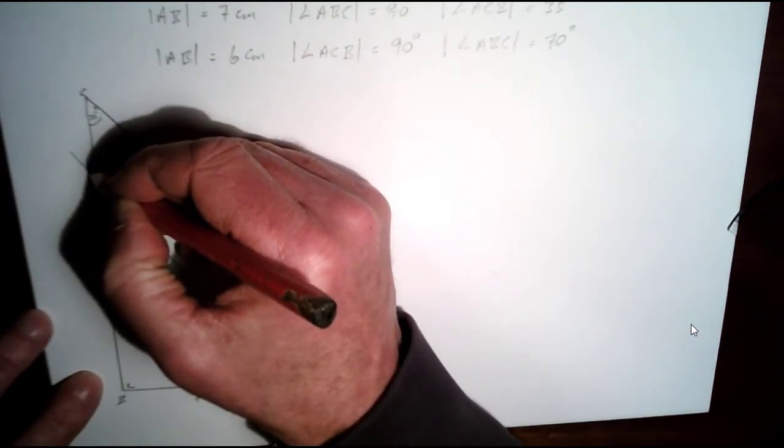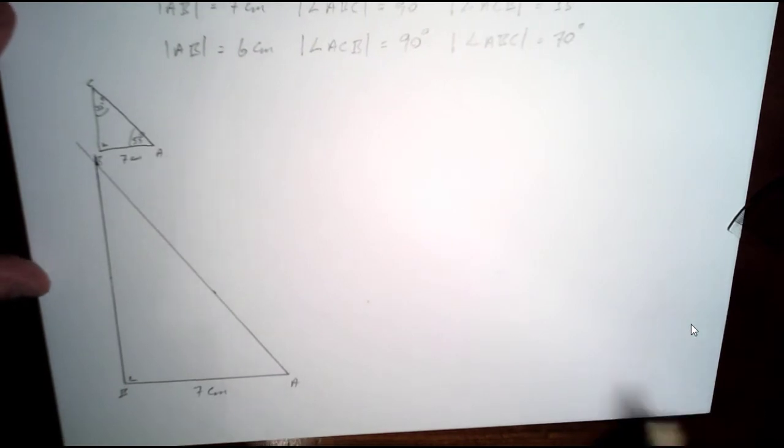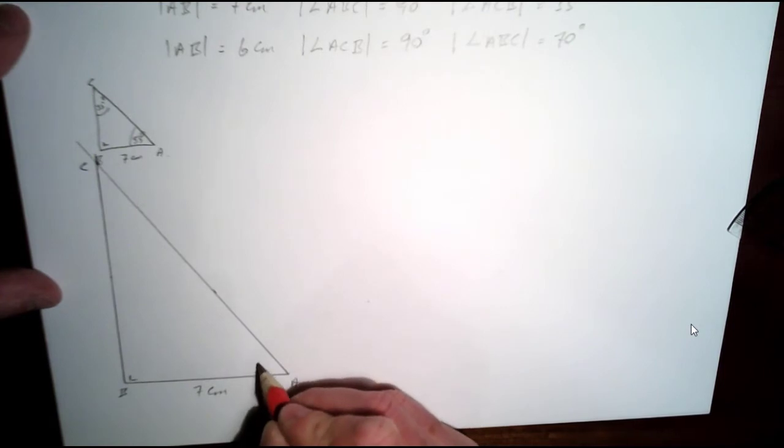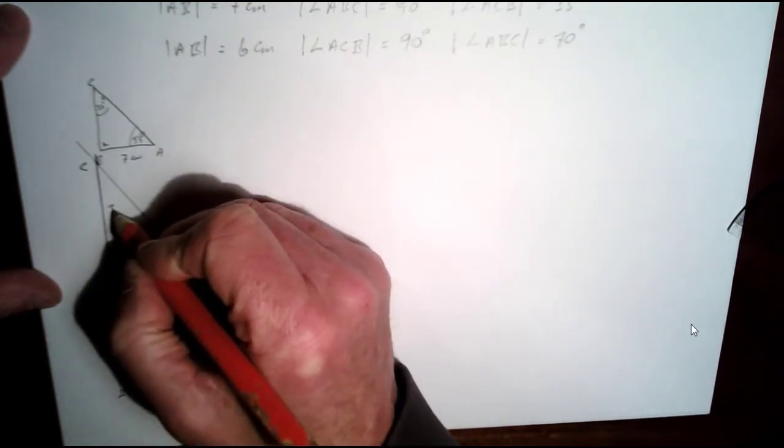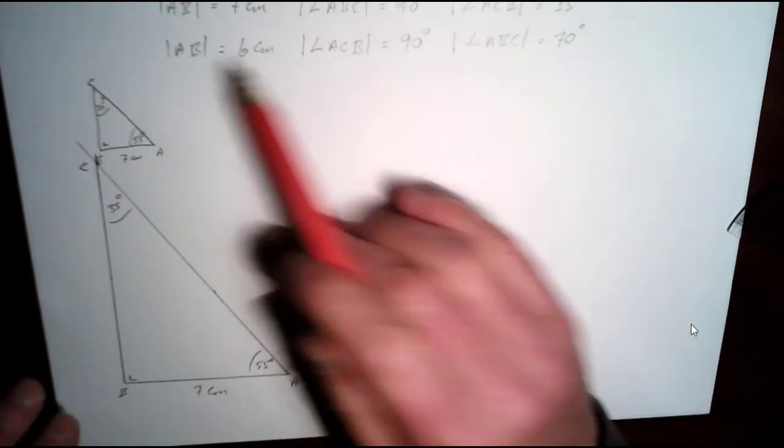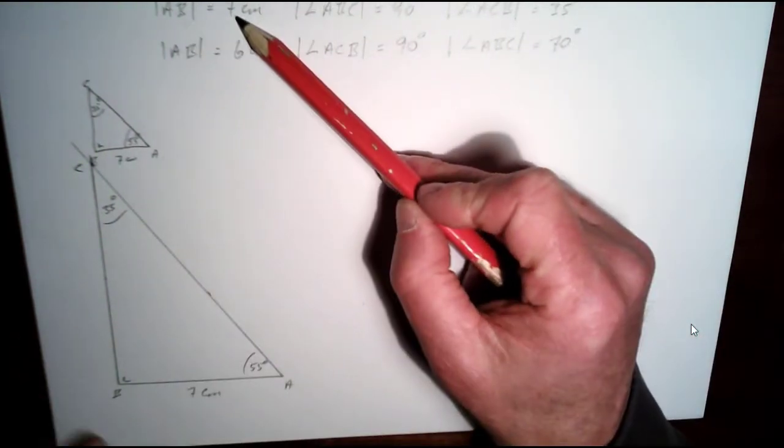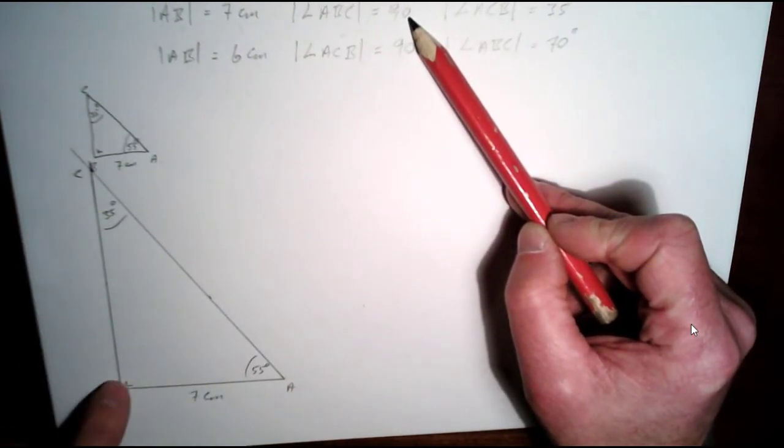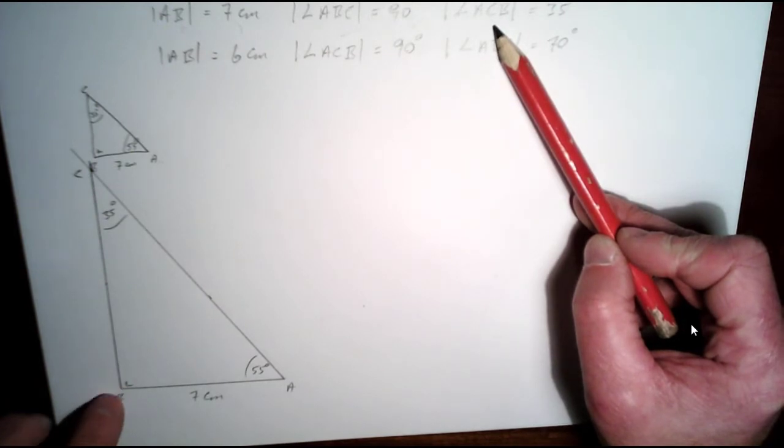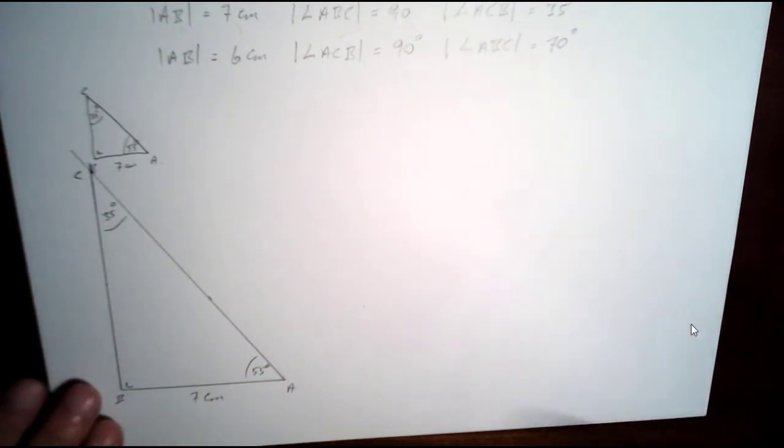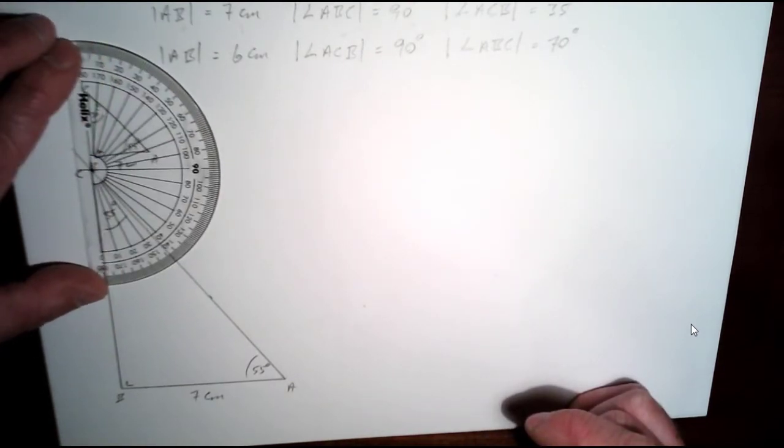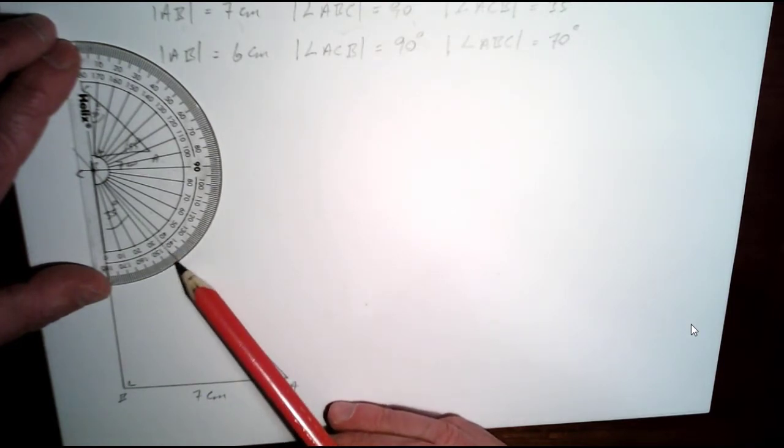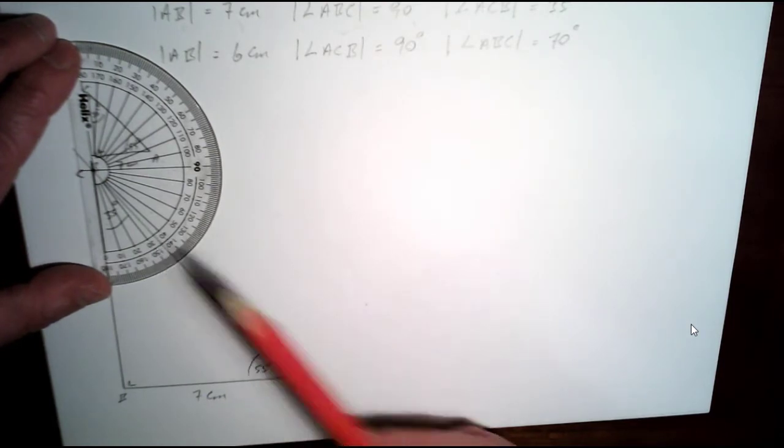And this here, almost on top of my rough sketch, but this will be C here. So this is 90 degrees here. This is 55 degrees here. And this is my 35 degree angle here. So that corresponds to everything we were given. AB is 7, ABC is 90, so this angle here is 90, and ACB is 35. ACB is 35 degrees. And we can check that by putting our protractor here. And you can see here we've got 35 degrees just here. So that's perfect.